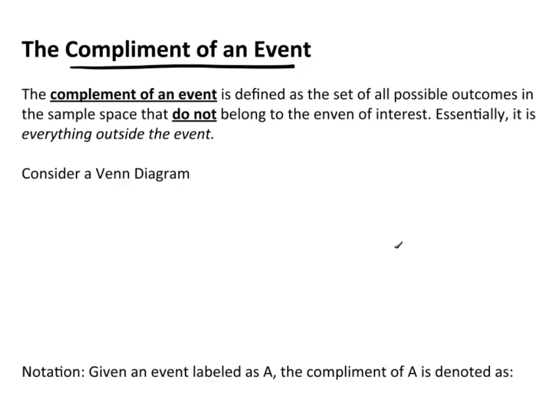The complement of an event is defined as the set of all possible outcomes in the sample space that do not belong to the event of interest. Essentially, we think of it as everything outside the event.